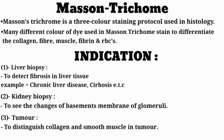Indications: We use Masson's Trichrome in diagnosis of liver biopsy, kidney biopsy, and in tumor diseases. In liver biopsy it may detect fibrosis in liver tissue, for example chronic liver disease and cirrhosis. In kidney biopsy, Masson's Trichrome is used to see the changes of basement membrane of glomerulus. In tumor diseases, it helps to distinguish collagen and smooth muscles in tumor.